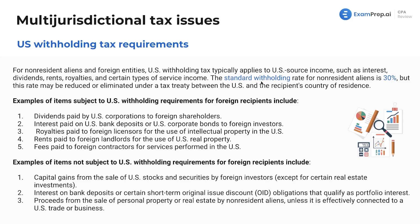The standard withholding rate for non-resident aliens is going to be 30%, but due to tax treaties and tariffs, the U.S. government, the president, and Congress can go back and forth. Basically, if you're friendly with the U.S., you'll get more preferential tax treatment; if not, you're going to get absolutely slammed. Items subject to U.S. withholding requirements include dividends paid by U.S. corporations to foreign shareholders, interest paid on U.S. bank deposits or U.S. corporate bonds to foreign investors, and royalties paid to foreign licensors for the use of intellectual property.